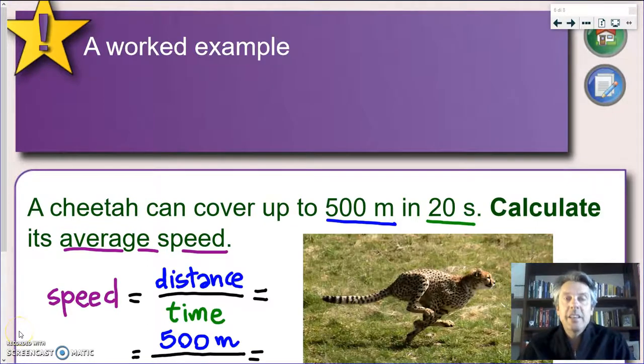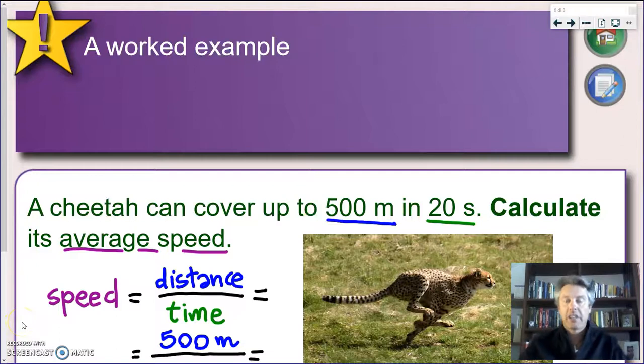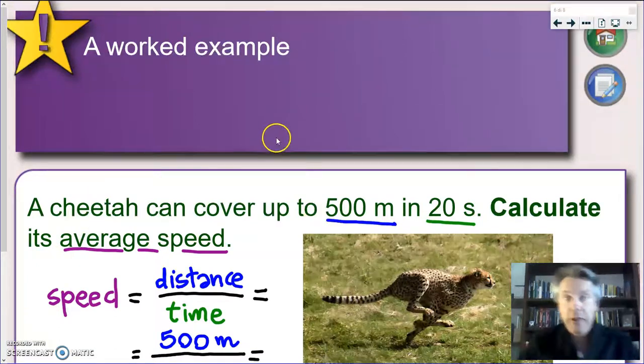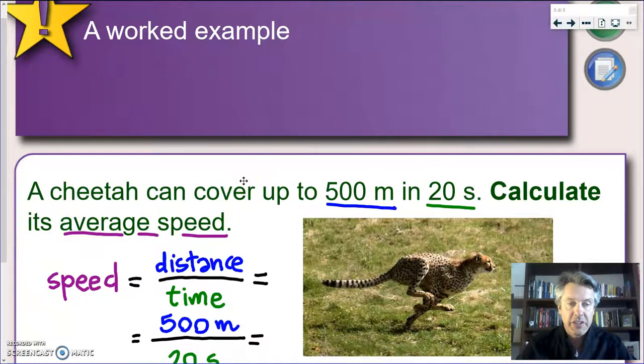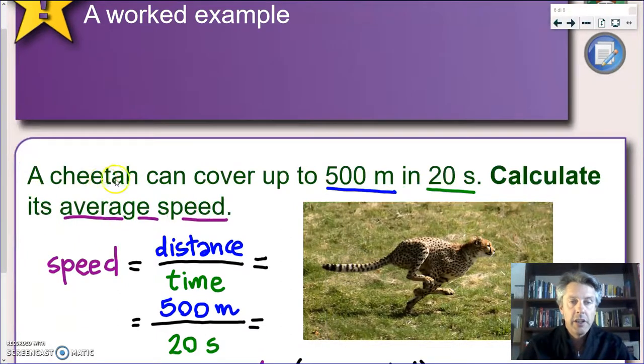But now let's see in practice how we can calculate the average speed of an object. So let's see a worked example. And what better example than the fastest land animal, which you know is the cheetah. Now let's look at this example: we have a cheetah that can cover up to 500 meters in 20 seconds and the exercise is asking you to calculate its average speed.